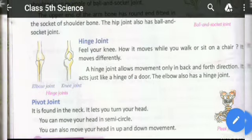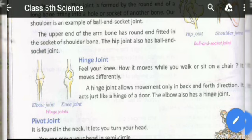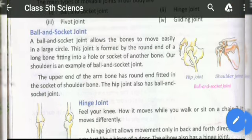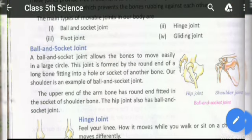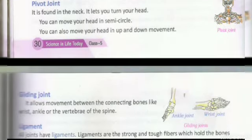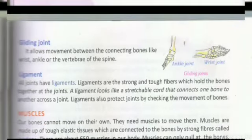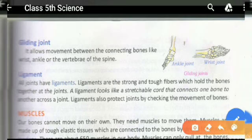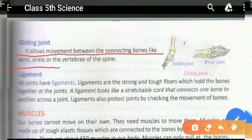The hinge joint is found in your elbow, and the ball and socket joint is found in the shoulder. The next joint is the gliding joint, which allows movement between connecting bones like the wrist and ankle.